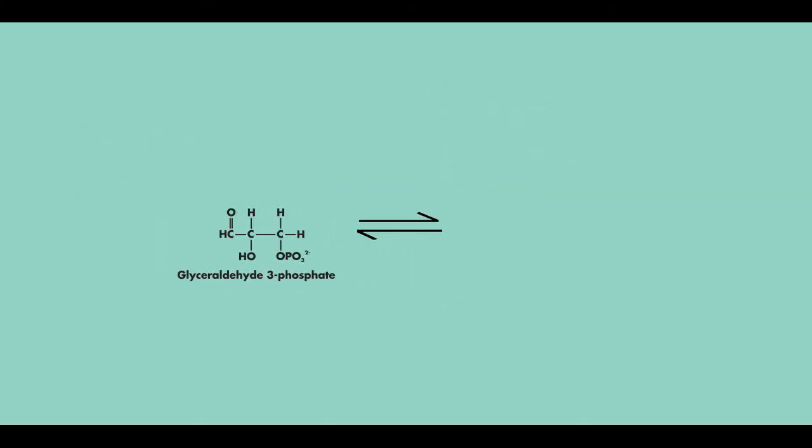The next step is catalyzed by an enzyme called glyceraldehyde 3-phosphate dehydrogenase. This enzyme catalyzes the first oxidation-reduction reaction of glycolysis. In this reaction, glyceraldehyde 3-phosphate is oxidized to 1,3-bisphosphoglycerate.